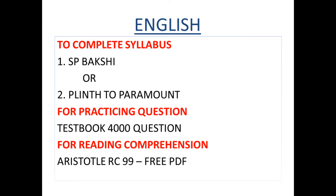After completing your syllabus from either of those two books, for practicing questions you have to buy the Testbook 4000 question book — I'll give the Amazon link in the description. After that, for reading comprehension, download the Aristotle RC 99 free PDF, which is available free of cost. I'll try to share this PDF in our Telegram group. So you don't need to buy anything for RC — just use that PDF. That's all for the English section.